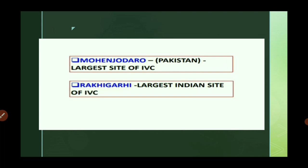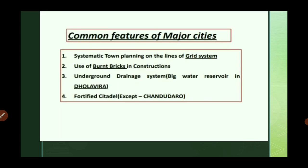Rakhigarhi is the largest site within India. Common features of major cities include systematic town planning on a grid system, use of burnt bricks in construction, underground drainage systems, large water reservoirs as in Dholavira, and a fortified citadel — except at Chanhu-daro.